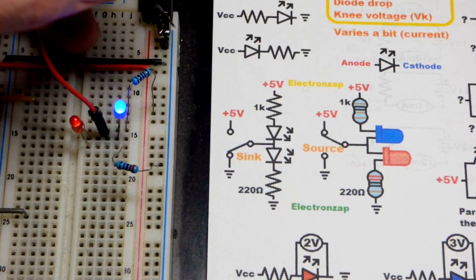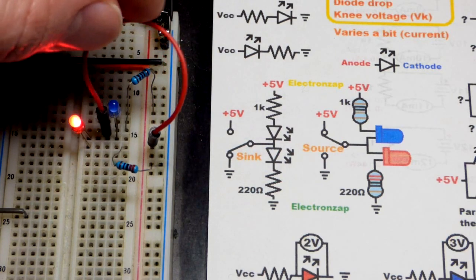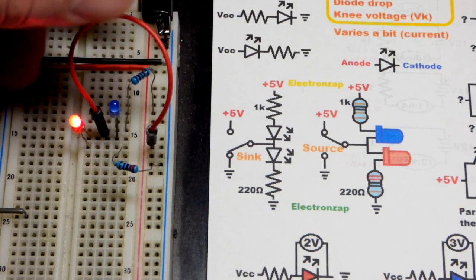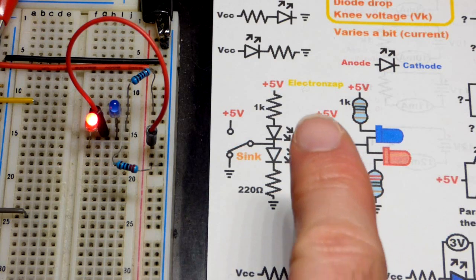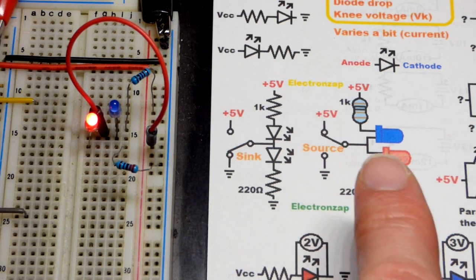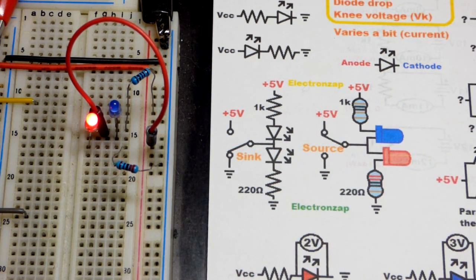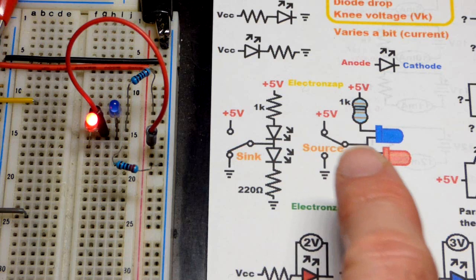Now we pop the jumper out and go to the positive supply rail. The red LED is now lit up and there's no current through the blue LED. We're directly connected to the positive supply — 5 volts — and that cancels out the voltage difference across the blue LED. All the voltage difference is across the red LED. The source is more positive, and we're talking about conventional current — the concept developed before they knew about electrons.